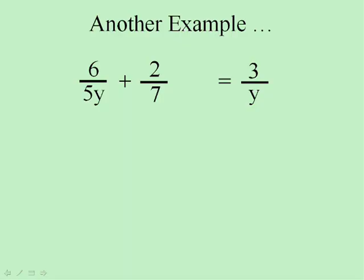This one will work the same way. Don't get nervous. Call on your least common denominator. Now only look at the bottoms and see if you can figure out what the least common denominator is. 5y, 7 and y. We'll need a 35y to get rid of all of those. Let's try it.